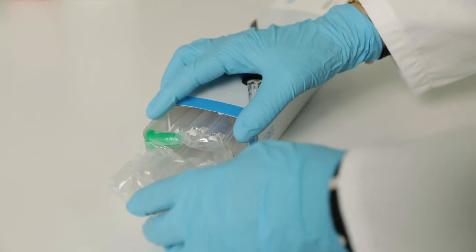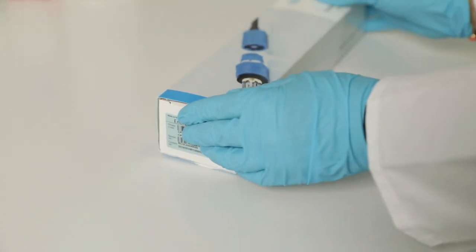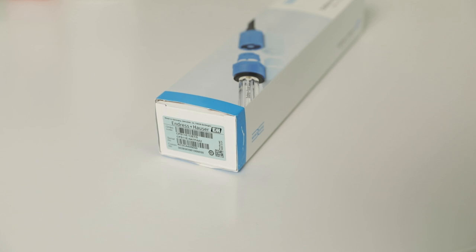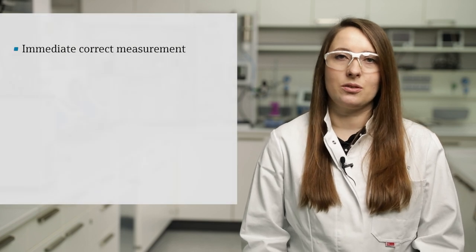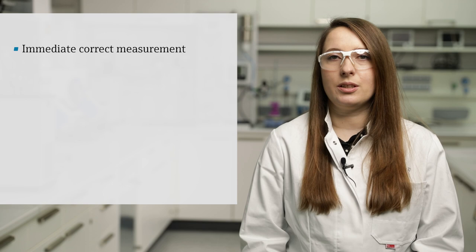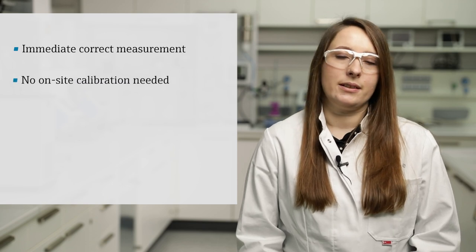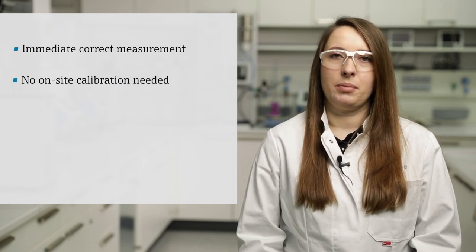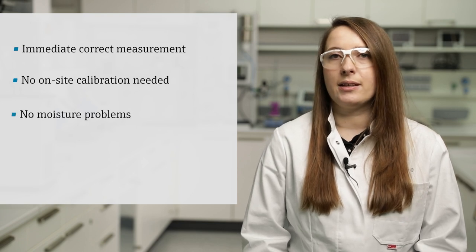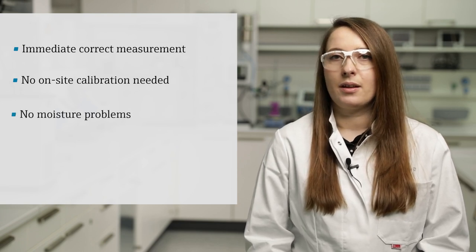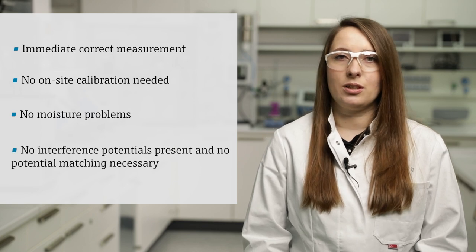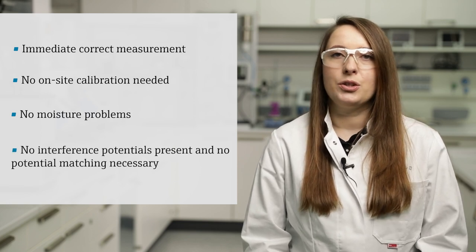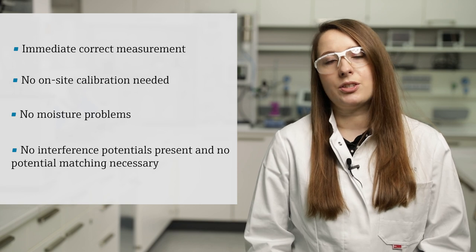Then place the sensor in its original packaging to protect the sensor during storage and transport. The advantages for you are immediate correct measurement as soon as the sensor is connected to a transmitter with Memosense technology. No on-site calibration, just plug and play. No moisture problems thanks to the Memosense plug. And no interference potential and potential matching due to the complete galvanic isolation of the sensor and the transmitter.